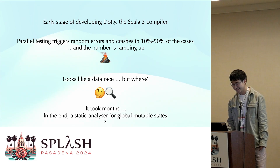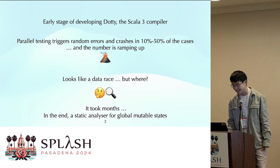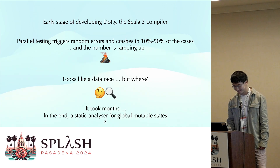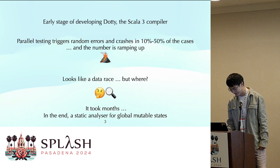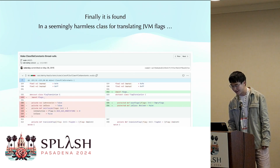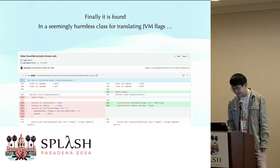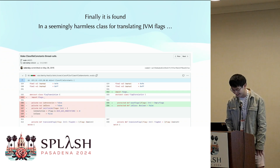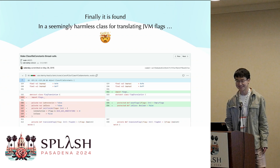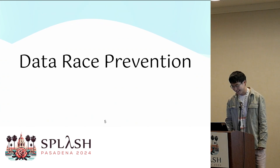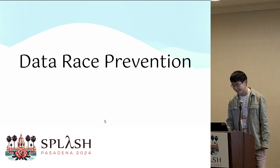Random errors and crashes that sound just like a data race — but where is it? It's a huge codebase, a compiler, so it took months for the team to solve it. In the end, Martin wrote a static analyzer that rejects all global mutable states unless explicitly marked. The culprit was actually a global object containing mutable state — a seemingly innocent object for translating JVM flags. That was a huge surprise to the team.